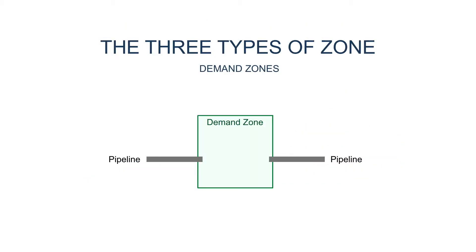The most common type of zone is the demand zone. As the name suggests, these zones typically capture gas delivered to be consumed in that demand zone. But after a change to the national gas rules in October 2016, plants also report gas that they receive at demand zones.